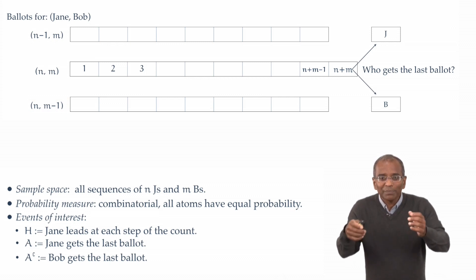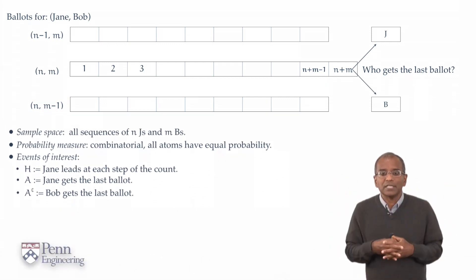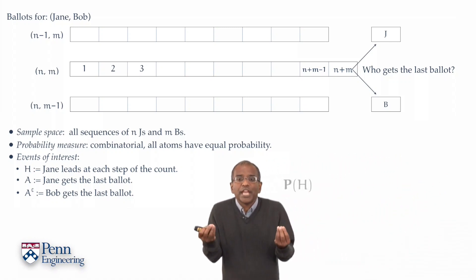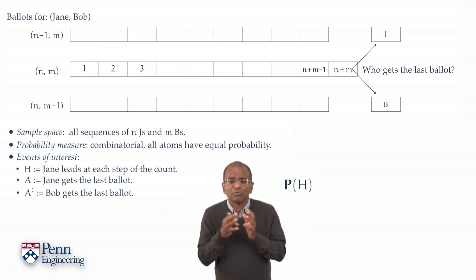Let's see how we can milk this. Remember, our target event is H, that Jane leads at every step of the count. This event has got a certain probability under our probability measure, our combinatorial measure. We don't know what it is. We would dearly love to know what it is. Of course, this is the object of exercise.